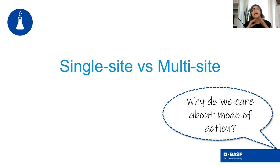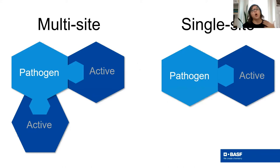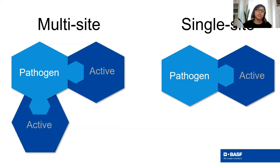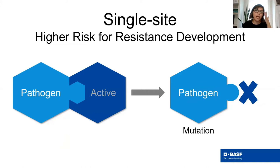It's important to understand fungicide mode of action when designing your programs. There are a ton of fungicide options and it can be confusing figuring out which to use and when. Some older contact fungicides have multi-site activity, attacking the fungus in multiple locations, and as a result have a much lower risk for resistance development. Many newer fungicides have single-site modes of action, with activity on one specific target site in a fungus, and can be fairly specific to a group of fungi or particular species.